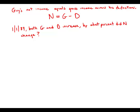Guy's net income equals gross income minus his deductions. I'm going to write this as N equals G minus D. On January 1st, 1989, both his gross income and his deductions increased. By what percent did the net increase?